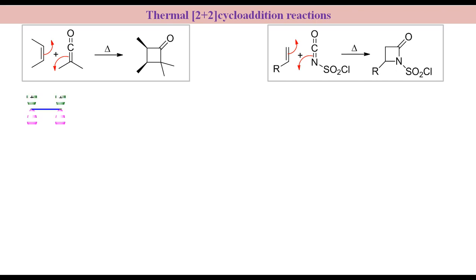The structure of HOMO of alkene and LUMO of ketene can be shown. The HOMO of alkene and LUMO of alkenic part of ketene have different symmetries.